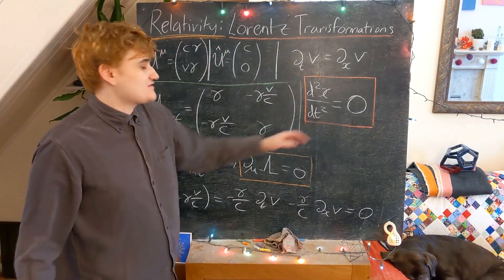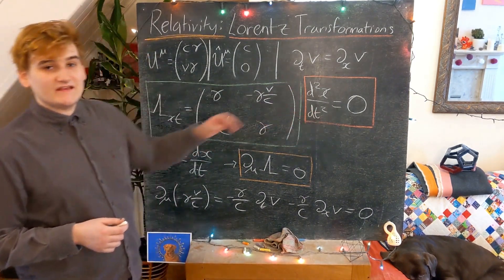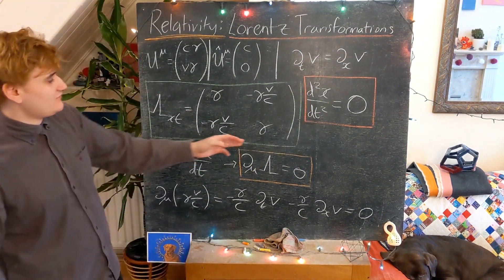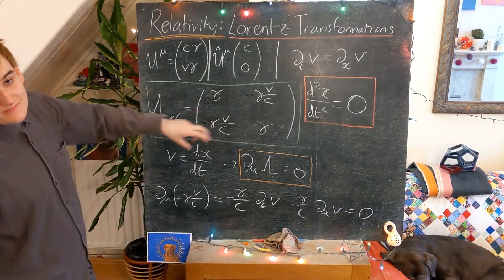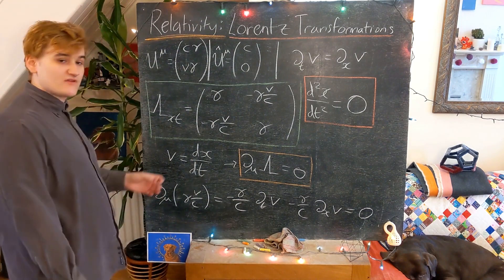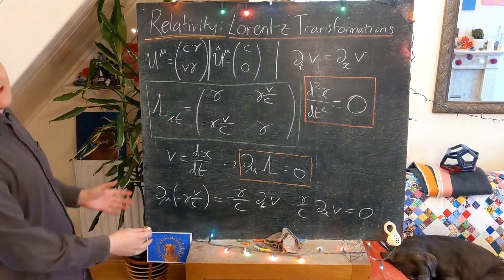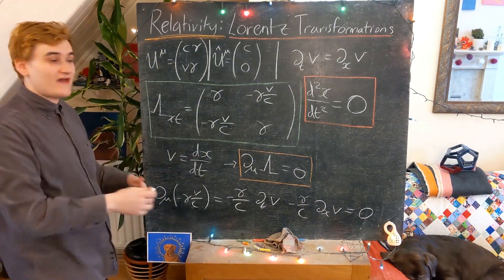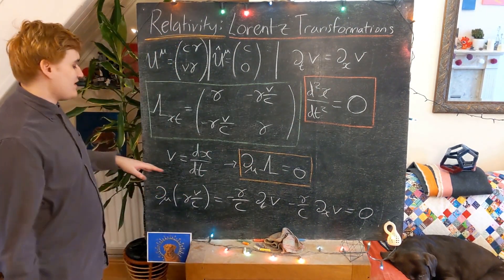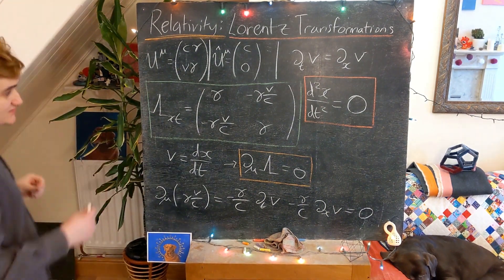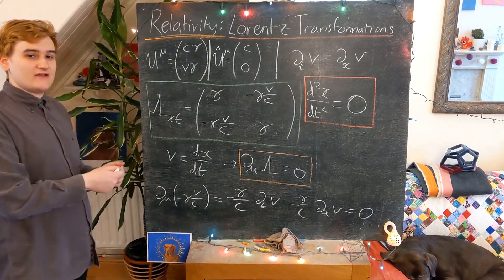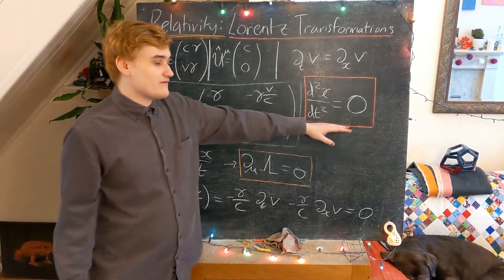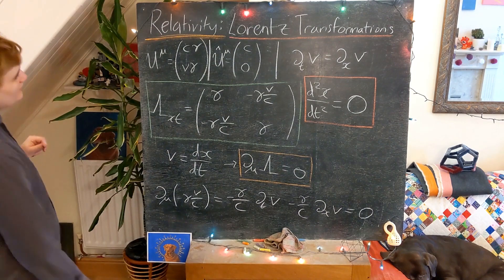Now we can realise what this condition is really saying. We know that dx/dt is just the velocity, and from classical mechanics, the second derivative of position with respect to time is the acceleration, or rate of change of velocity. So what this tells us is that when we perform a Lorentz boost, we have to boost to a moving frame, but that frame can't accelerate — it has to be moving with a constant velocity. When you perform a Lorentz boost, you're simply going from a stationary observer to an observer moving with a constant velocity; the observer isn't accelerating away from you.